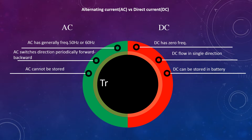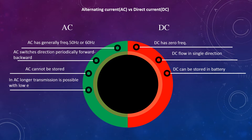Transmission: In AC, longer transmission is possible with low energy loss. In DC, longer transmission is not possible due to high energy loss.